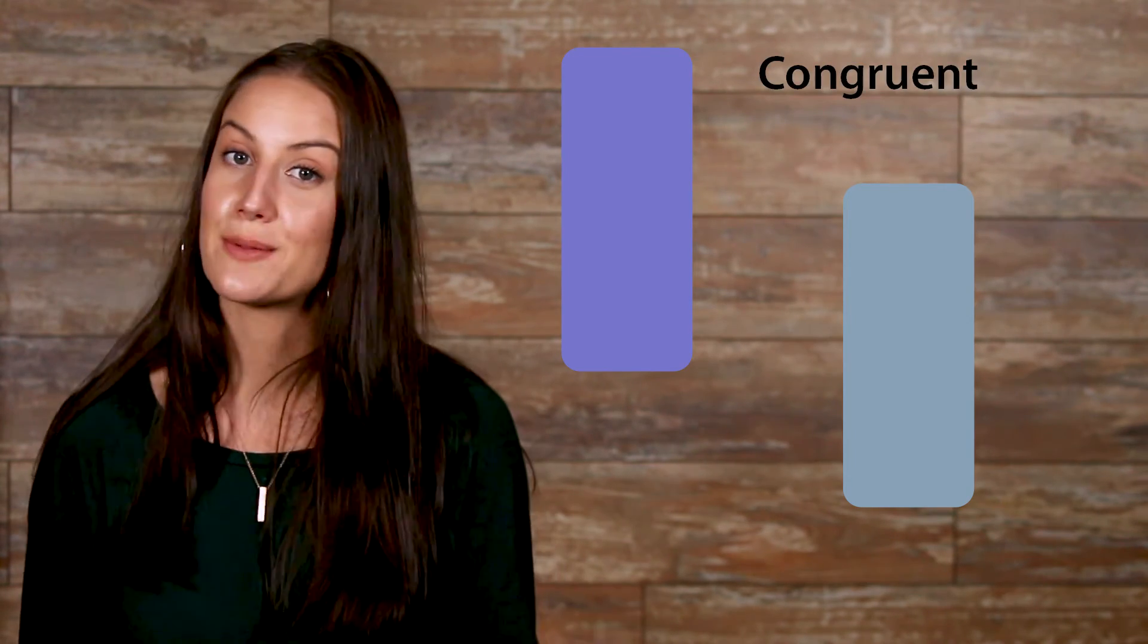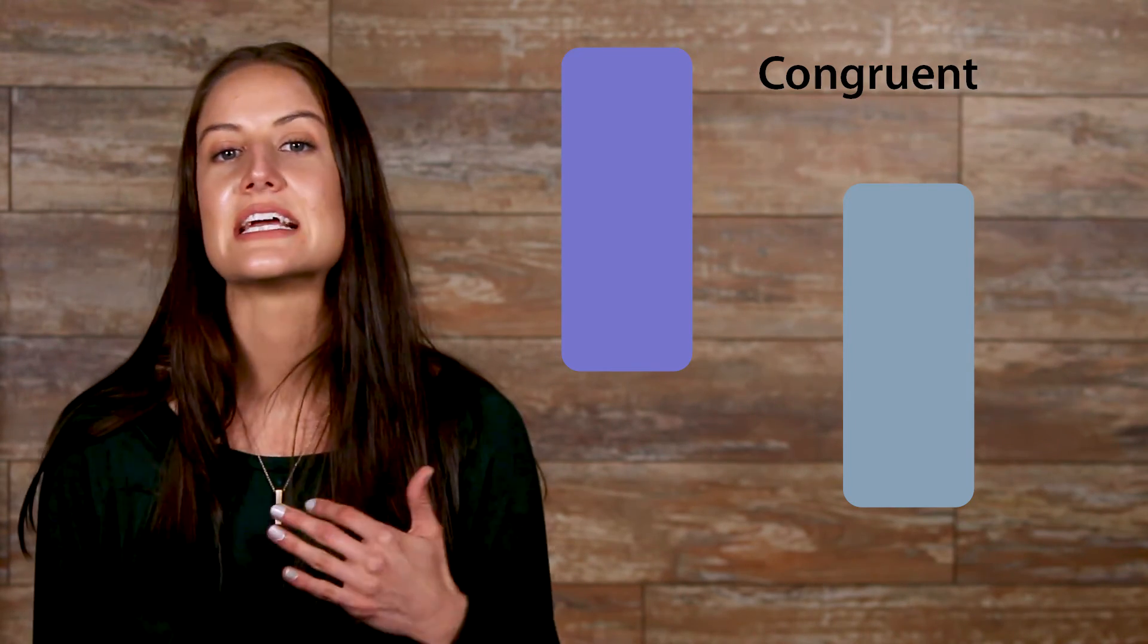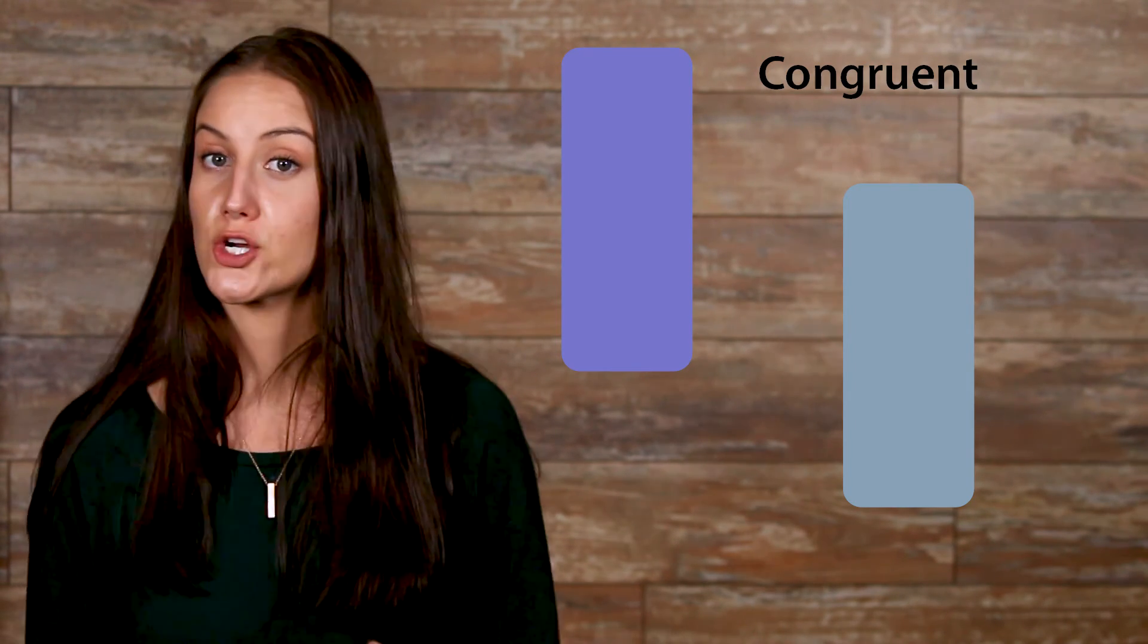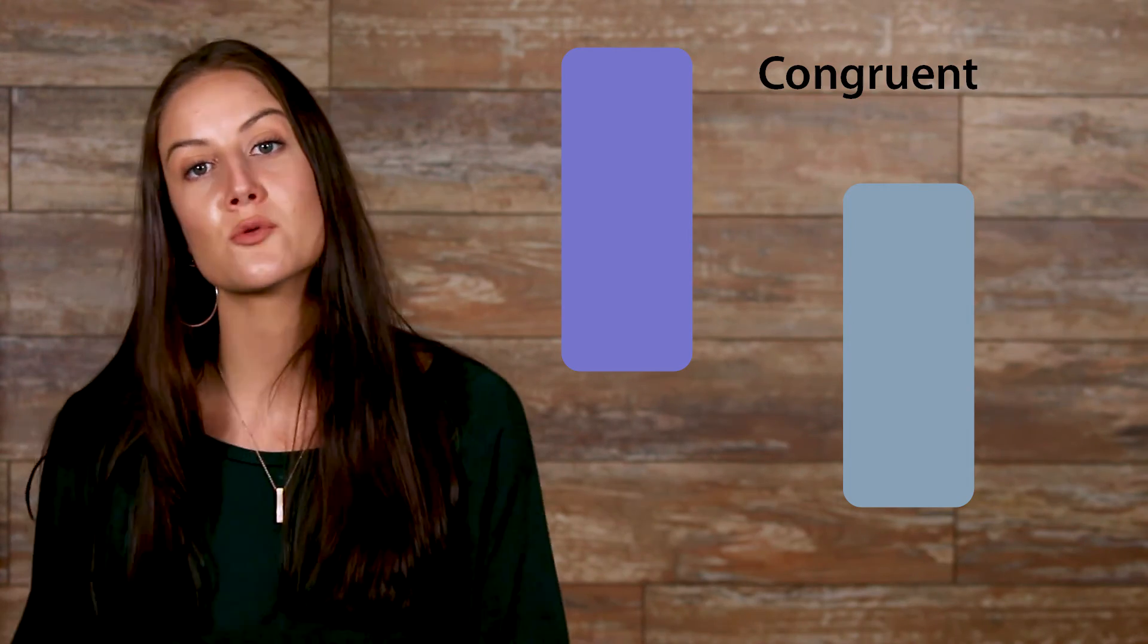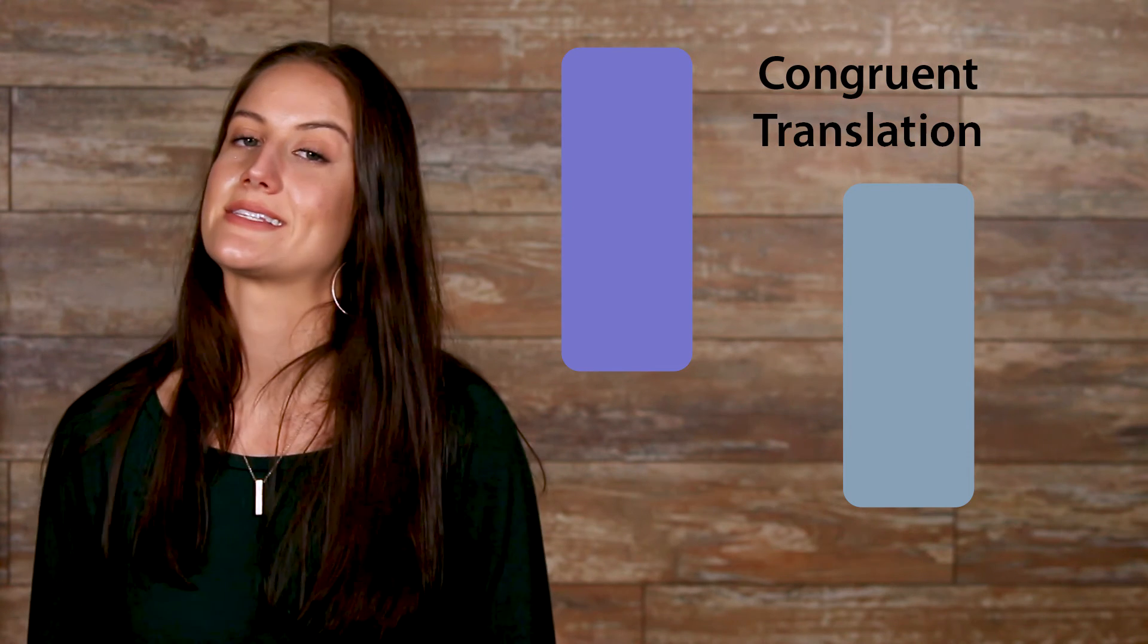Okay, last one. Are these two shapes congruent? Yeah! They are identical in shape and size, but what type of movement has been made? Was it flipped like the last one? No. It's not a reflection. Has it been turned or rotated? No. So it's not a rotation. Has it been slid? Yes. So we know that this is a translation.